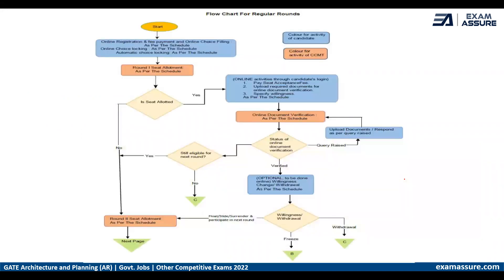Once the registration process is done, there are regular rounds that take place. In this video I will be explaining about the regular rounds and how the process works. Once your online registration is done, the first round begins, after which one is either allotted a seat or not allotted a seat.